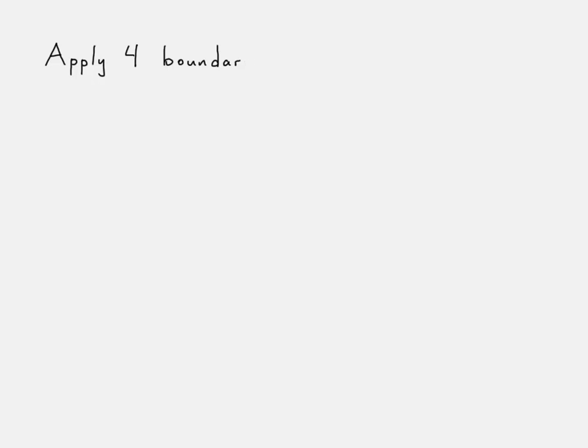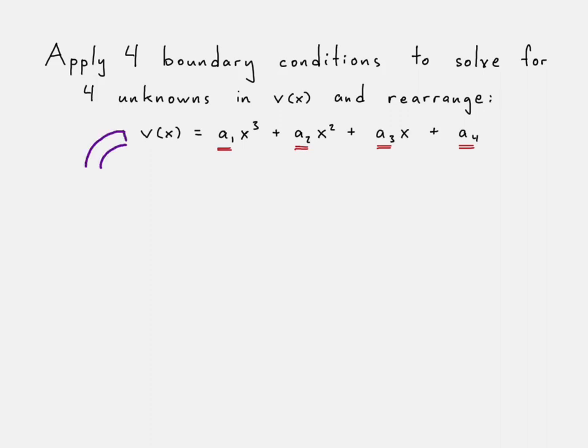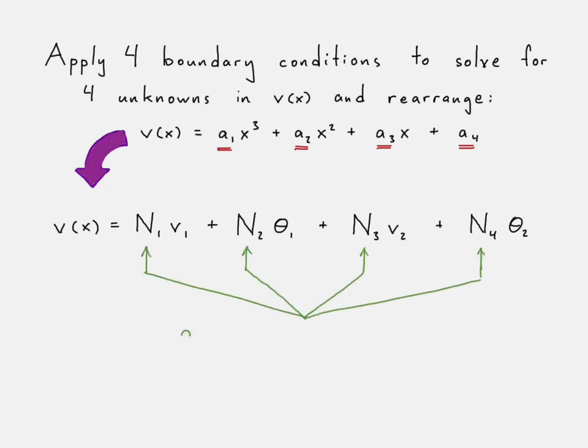So we go ahead and apply those, and we solve for the four unknowns. We rearrange to eventually get something that looks like this, now put in terms of our shape functions and our displacements or rotations. So there's our shape functions, and in the previous slide we saw what the nodal displacements and rotations were.